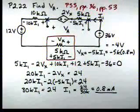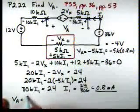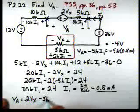And by Kirchhoff's voltage law, VA is equal to 2VX minus 5Ki1.